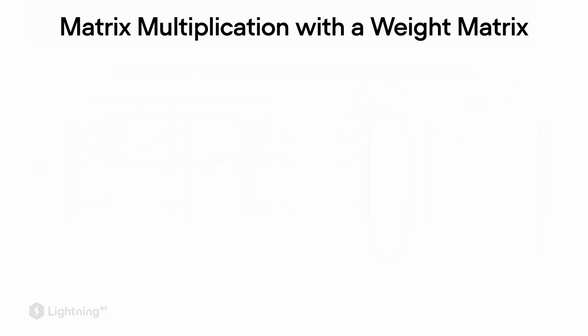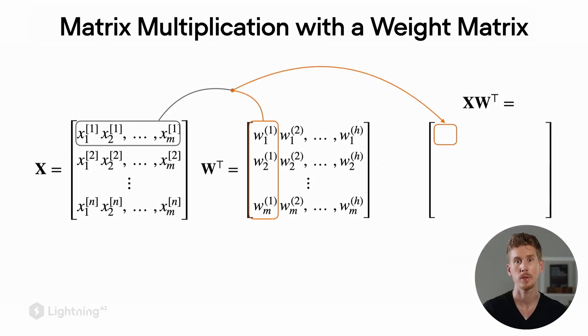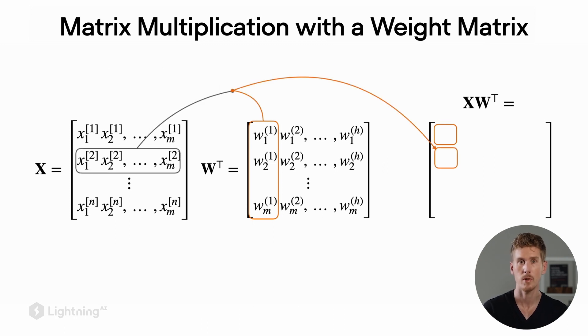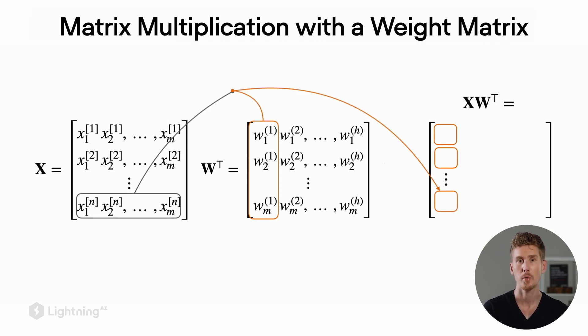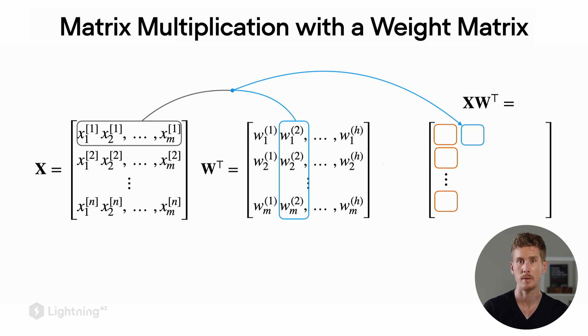To obtain the first output value, we compute the dot product between the first row in the input matrix and the first column of the weight matrix. Then we continue like we did in the previous video and compute the dot product between the second row of the input matrix and still the first column in our weight matrix. The first column represents the first weight vector. We keep going and compute the dot product between each row in the input matrix and the weight vector.